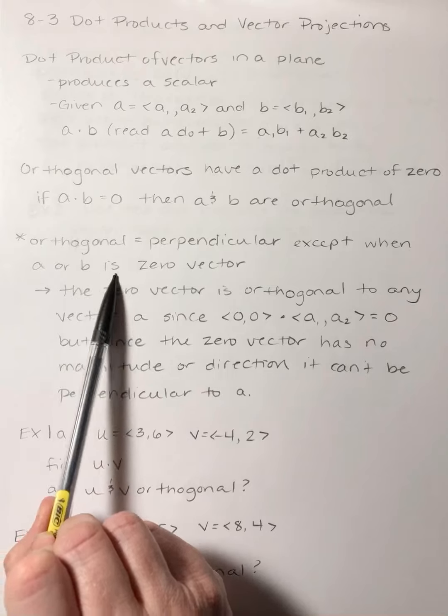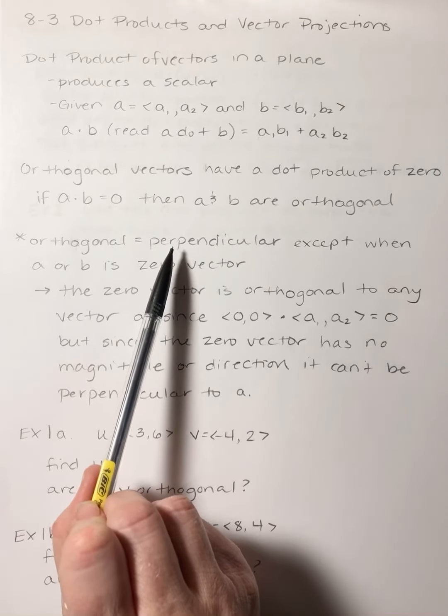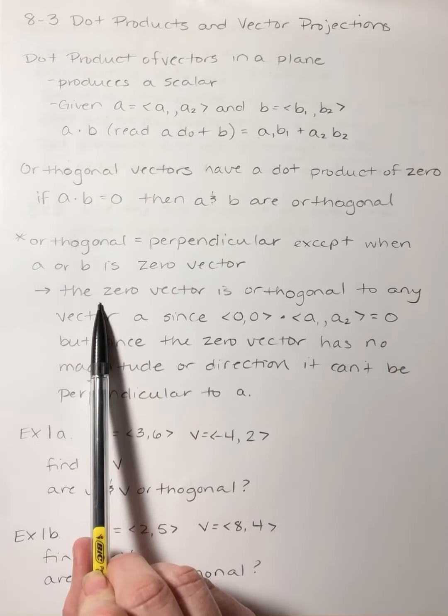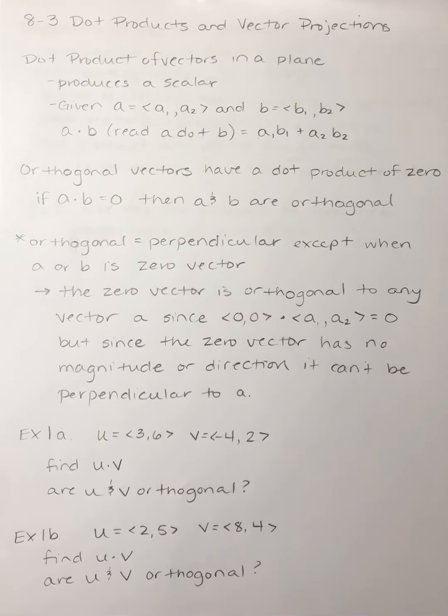If a or b is a zero vector, we can't use the word perpendicular because the zero vector doesn't have magnitude or direction. If I take the zero vector and do the dot product with any other vector, I'm going to get zero as my dot product, which means it is orthogonal. But it's not going to be perpendicular because the zero vector has no magnitude, no direction, and can't be perpendicular.